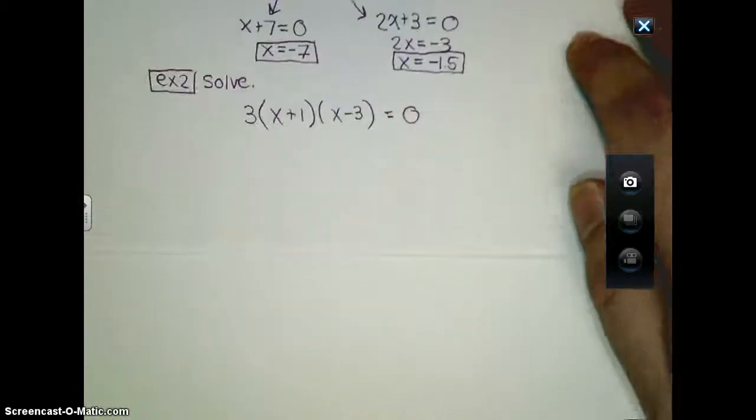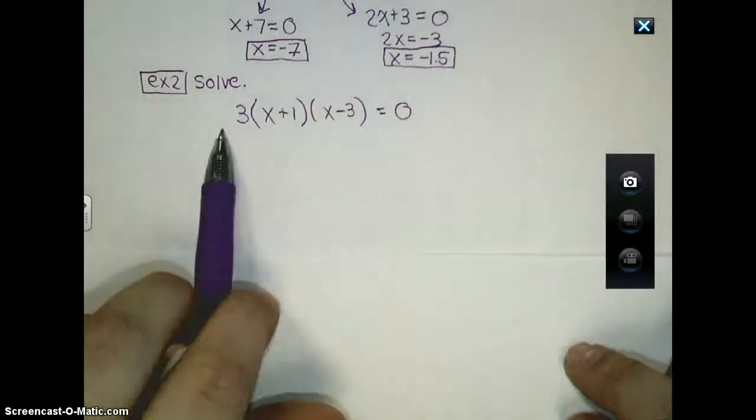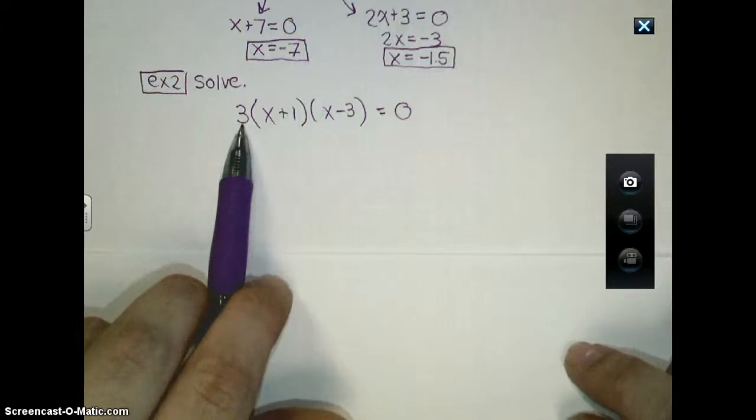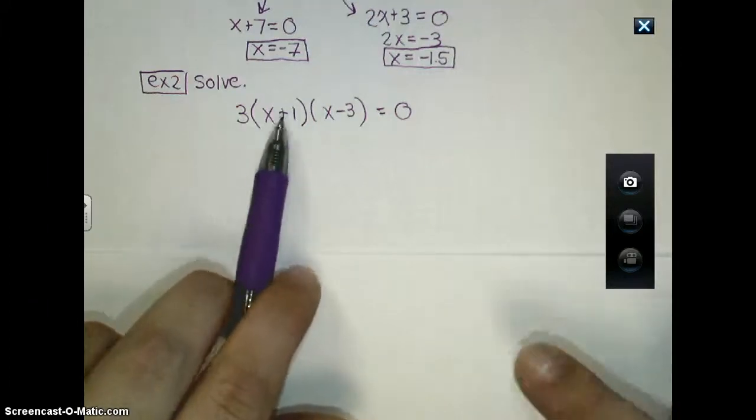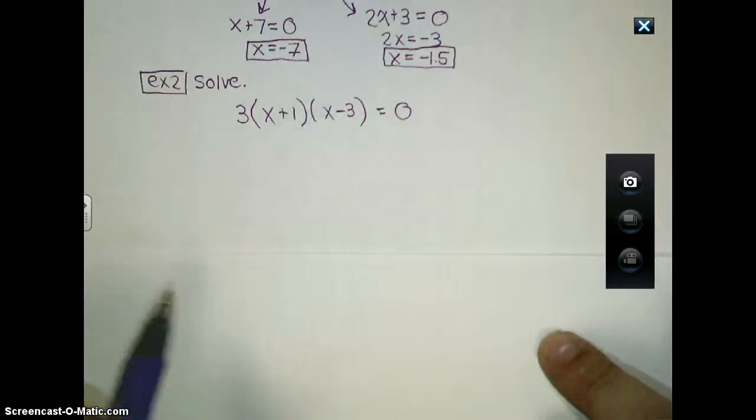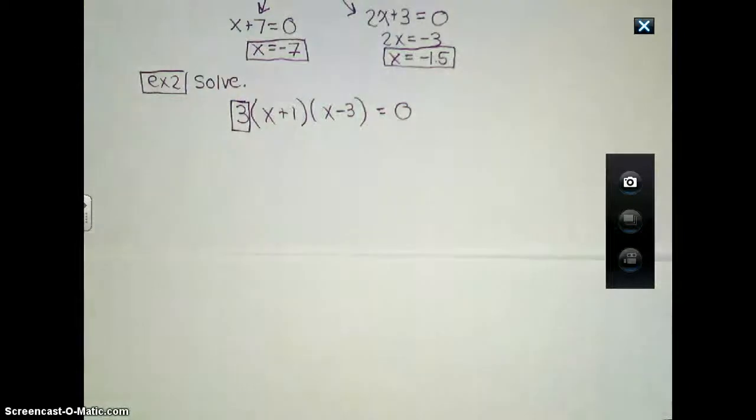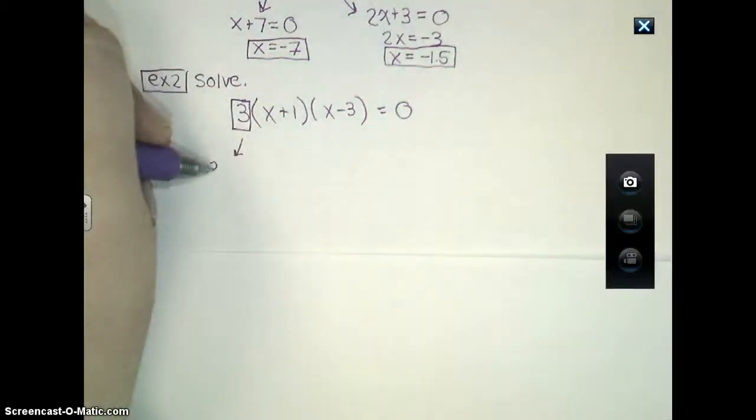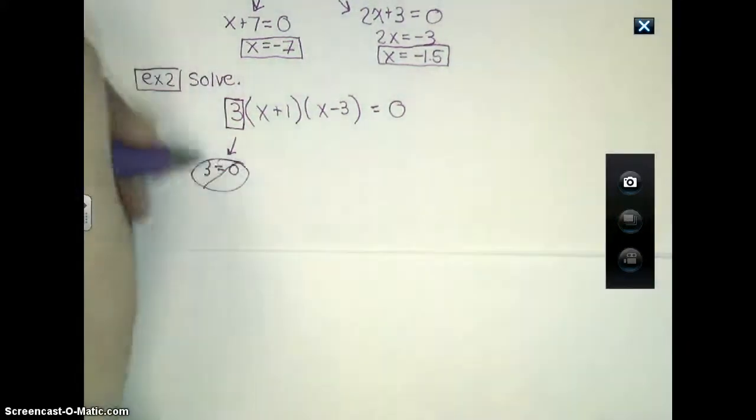Let's look at one more example of a problem already factored. Here's a problem that I have factored already that actually had a GCF in it of three. In this case, I have three different factors: three, x plus one, and x minus three. So I'm going to take each of these factors and set it equal to zero. One thing to point out though, you don't actually have to take the GCF and set it equal to zero, because if you do, you're going to get three equals zero, and there's just no way you can turn a three into a zero. So this isn't a possibility.